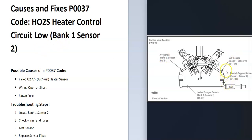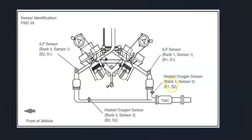The first thing to do when you get this code is to locate bank one sensor two oxygen sensor. There can be some differences depending on the vehicle, engine type, year, and things like this. So it's always a good idea to get a diagram where the oxygen sensors are located.